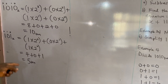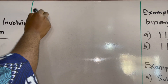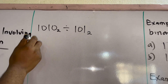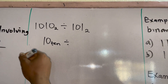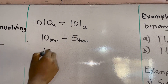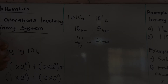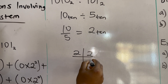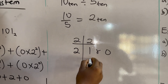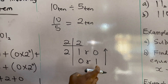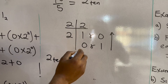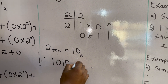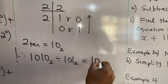After converting, we divide 1010 base 2 by 101 base 2, which is 10 base 10 divided by 5 base 10, giving us 2 in base 10. Now we convert 2 base 10 back to base 2: 2 divided by 2 gives 1 remainder 0; 1 divided by 2 gives 0 remainder 1. Reading the remainders upward: 2 base 10 equals 10 base 2. Therefore, 1010 base 2 divided by 101 base 2 equals 10 base 2.